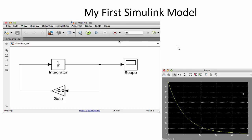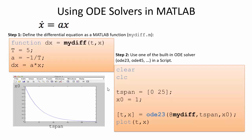If we do the same simulation in MATLAB, we get the same result. In MATLAB, we create a function for the differential equation in one script file, then in another script we set the t-span and initial value and call one of the built-in solvers — in this case ode23. The first input is the function name, then the t-span and initial value. Plotting gives the same results as Simulink.